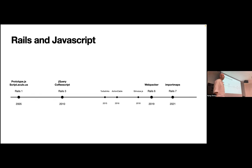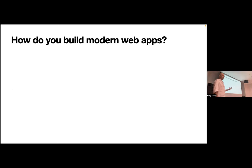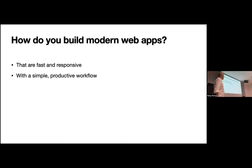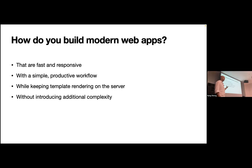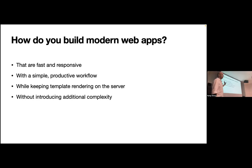How do you currently build modern web applications? We want applications to be fast and responsive, but we also want a simple and productive workflow, and we want to keep template rendering on the server without introducing additional complexity. The whole JavaScript world between 2010 and 2020 went through a decade-long journey only to rediscover server-side rendering. Hotwire is one way to tackle all these problems at once — it's not the only way and it's definitely not the best way, but it's the Rails way of solving these problems.